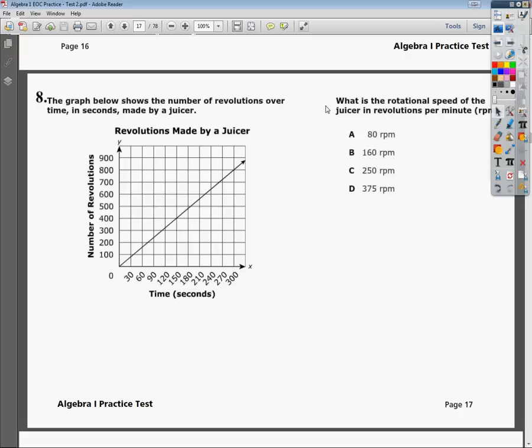The question says, the graph below shows the number of revolutions over time in seconds made by a juicer. What is the rotational speed of the juicer in revolutions per minute?